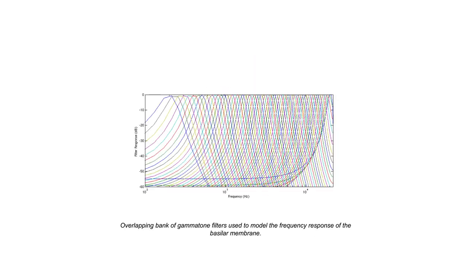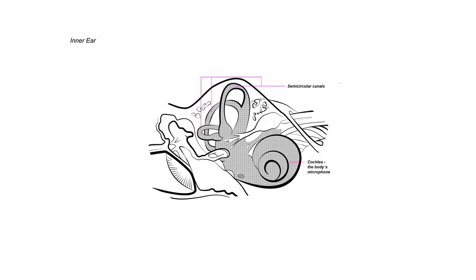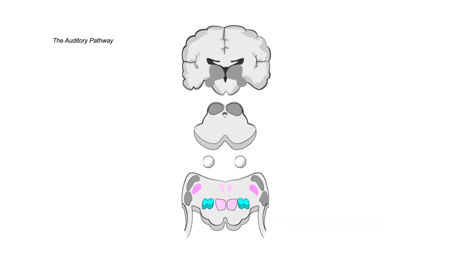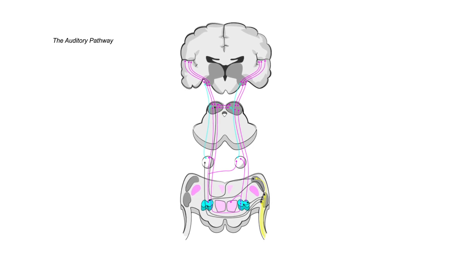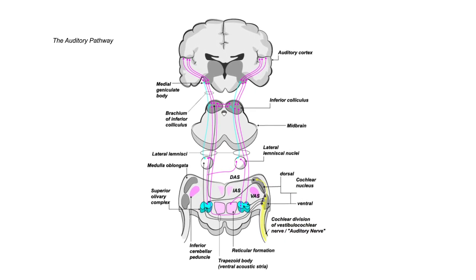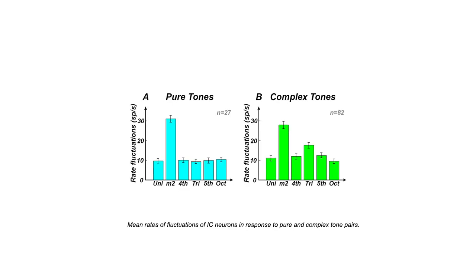Today, our models of consonance and dissonance also take into account our understanding of the anatomy and functioning of the inner ear, particularly the basilar membrane, as well as the ways in which temporal fluctuations associated with the perception of dissonance are encoded and transmitted along the auditory nerve and in the inferior colliculus.